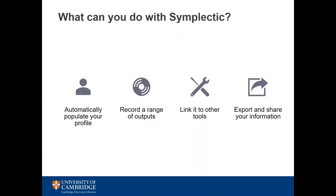You can of course also add any outputs manually. Once you have claimed or added an output to your list it contributes to citation counts and other statistics collected by the University. A range of research outputs can be added from the traditional such as books, articles and presentations through to more innovative outputs such as media, datasets or conference posters.